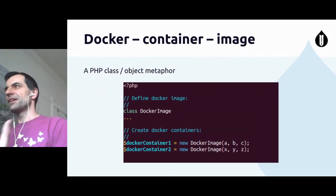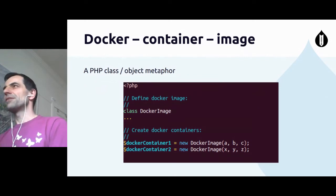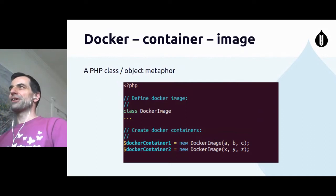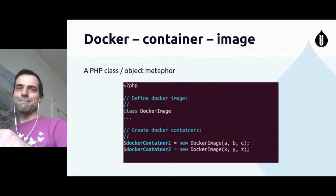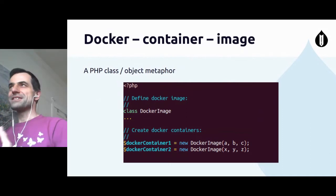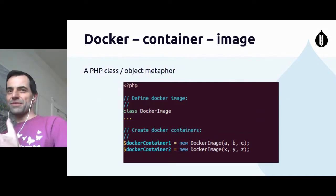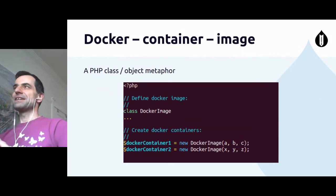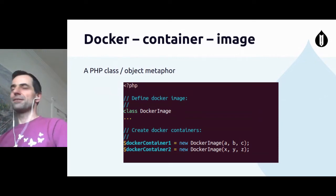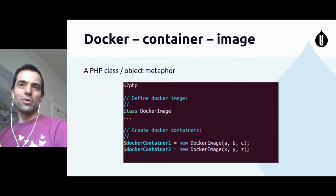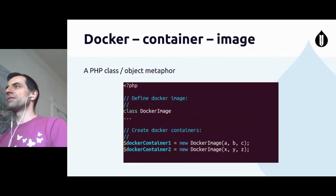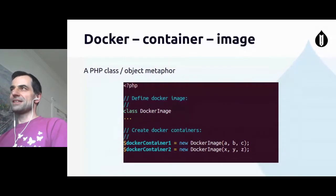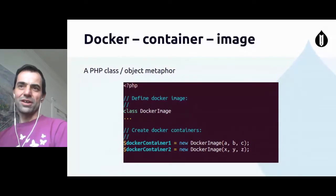Another metaphor: if you are a PHP developer, you can think of the Docker image as a PHP class with all its definition. And then when you instantiate the class, you create the object — many of them. You can create more than one object from that class, and that's actually the running container.